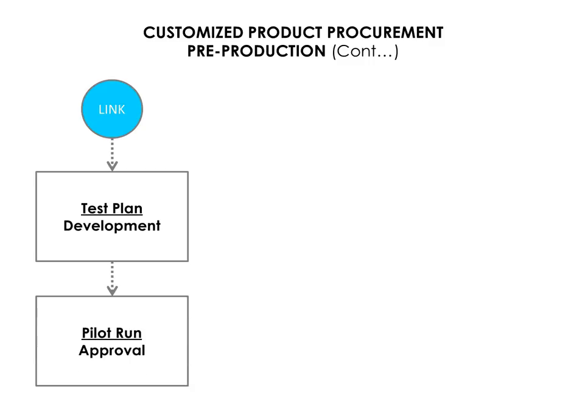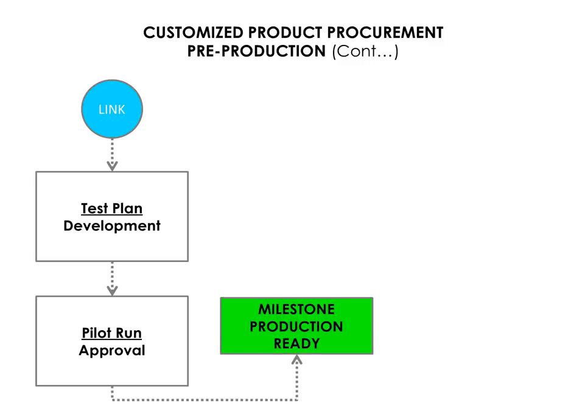The last step in the pre-production phase is to conduct a pilot run. This should be conducted with the intended mass production setup including all of the correct tooling, test equipment, procedures and processes that will be in place, as well as the actual operators that will be assigned to build your product. A trial run may involve a number of different runs with iterative improvements between each of those runs, which ultimately results in the process being signed off as production ready. This will be your milestone in your project plan for production ready state.